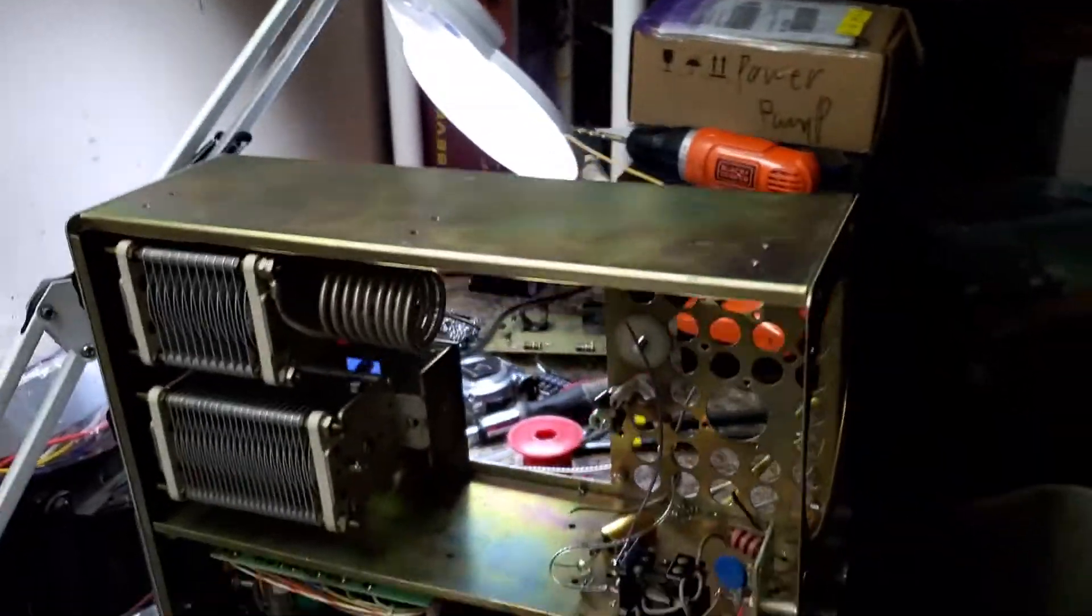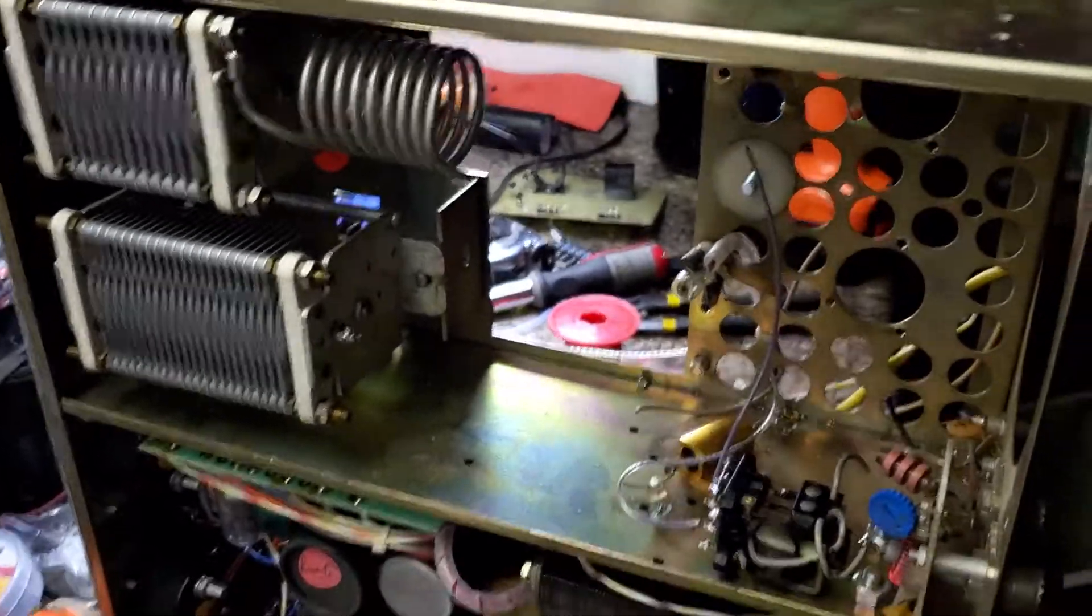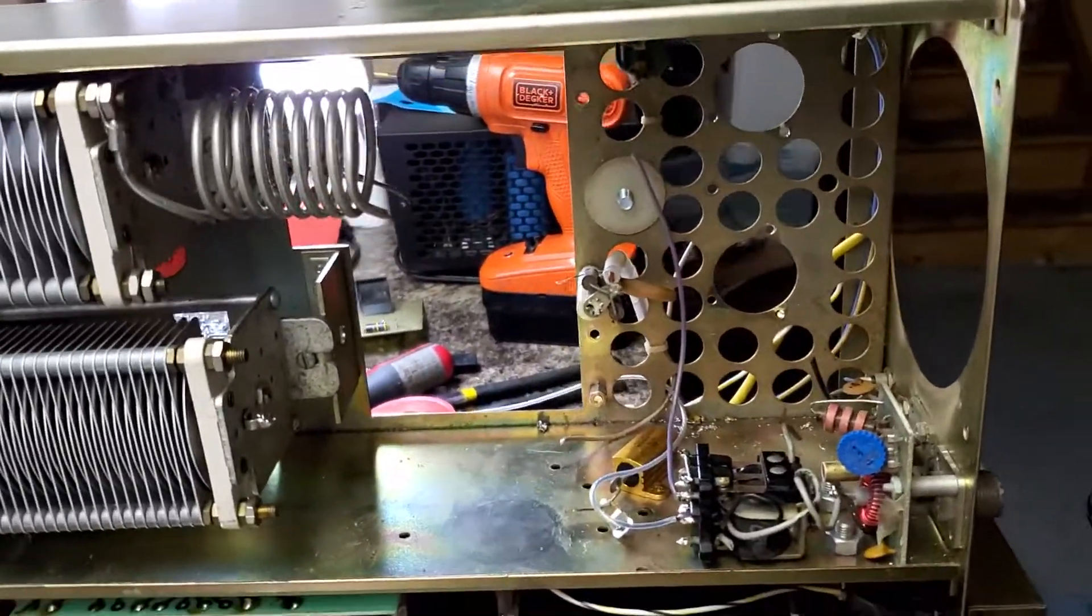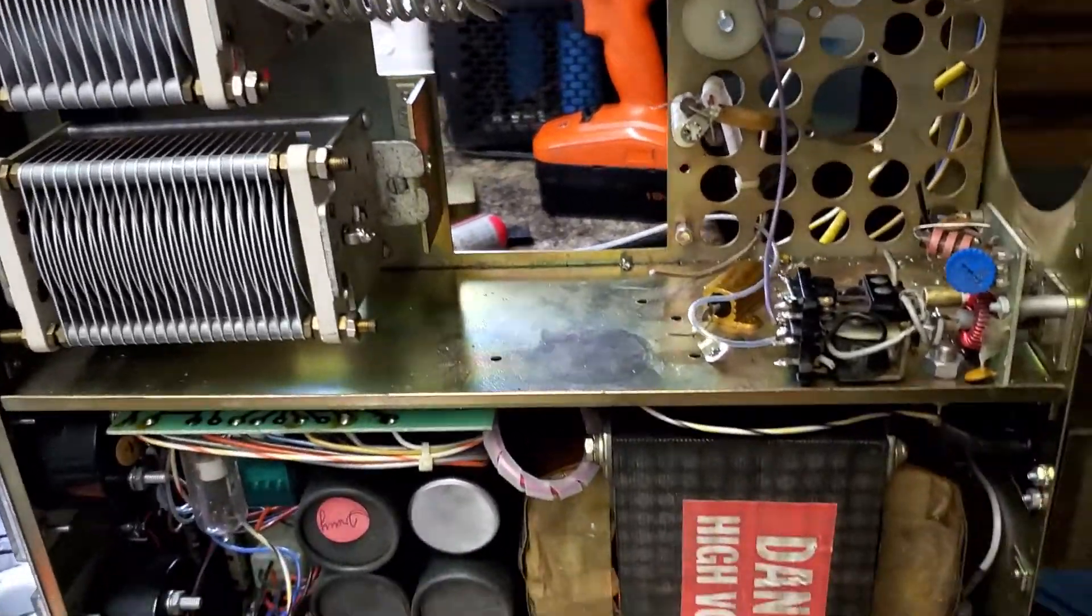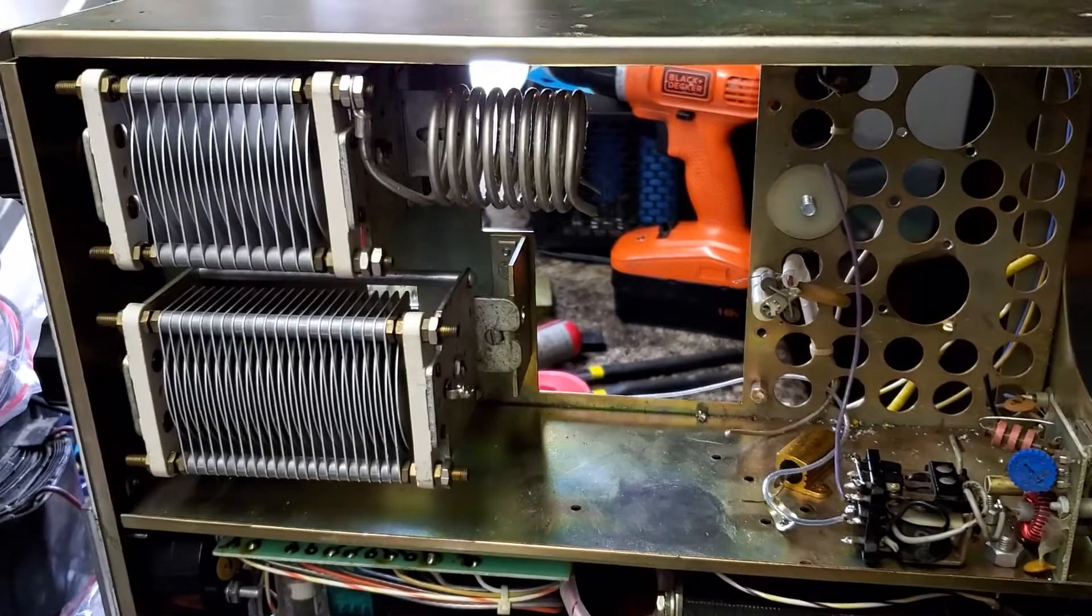Here we are back on our Dentron. After speaking to the customer, the problem is we can't get tubes for this thing - it's a paperweight. We're going to convert it. This guy's an 11-meter guy, so he doesn't really need all the band switches and stuff.